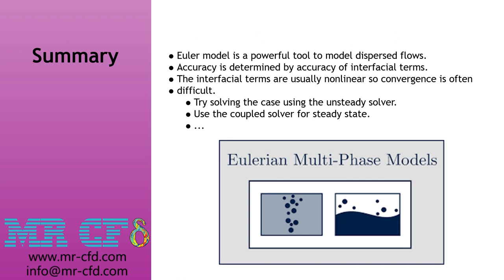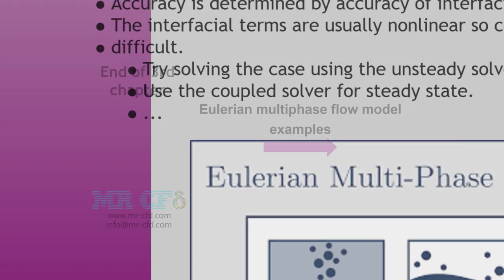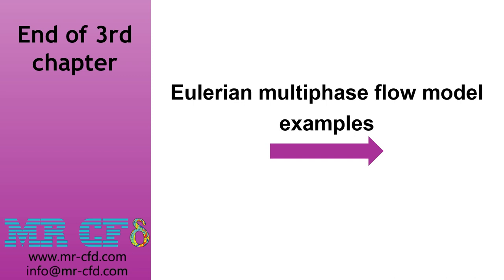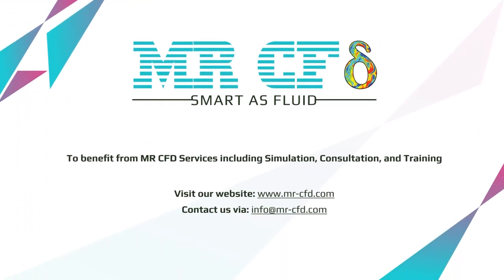In summary, the Eulerian model is a powerful tool to model dispersed flows. Accuracy is determined by the accuracy of interfacial terms, which are usually non-linear, making convergence often difficult. To overcome this, you can try solving using the unsteady solver or using the coupled solver for steady state. In this chapter we covered the Eulerian multiphase flow model and its sub-models. In the next session, examples will demonstrate how to use the Eulerian model to simulate different flow problems. To benefit from MrCFD services including simulation, consultation, and training, contact experts via info@mrcfd.com or visit www.mrcfd.com.